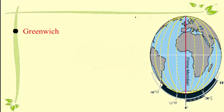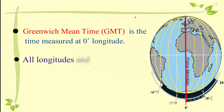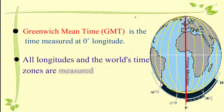Greenwich mean time or GMT is the time measured at zero degree longitude. Zero degree longitude ko 1884 se Greenwich meridian kaha jata hai. Kyunki sare longitudes aur sare time zones yahin se measure kiye jaate hain.